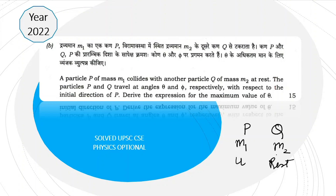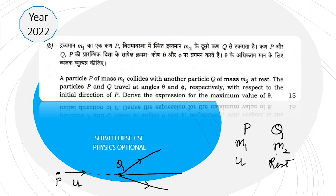Let's draw the situation. We have particle P moving in this direction with velocity u, and particle Q at rest. After the collision, P and Q move in different directions, making angles theta and phi respectively. This is the situation. We have to derive the expression for the maximum value of theta. This question belongs to 2D collision.